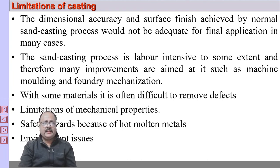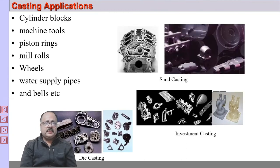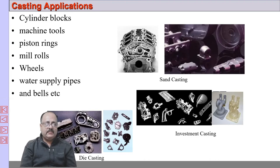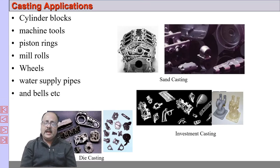Why do we apply casting? Some applications include cylinder blocks, machine tools, piston rings, mill rolls, wheels, water supply pipes, and belts. This is a very limited list — the applications are really wide and frequently used in industry. Different casting processes are applied in different applications.